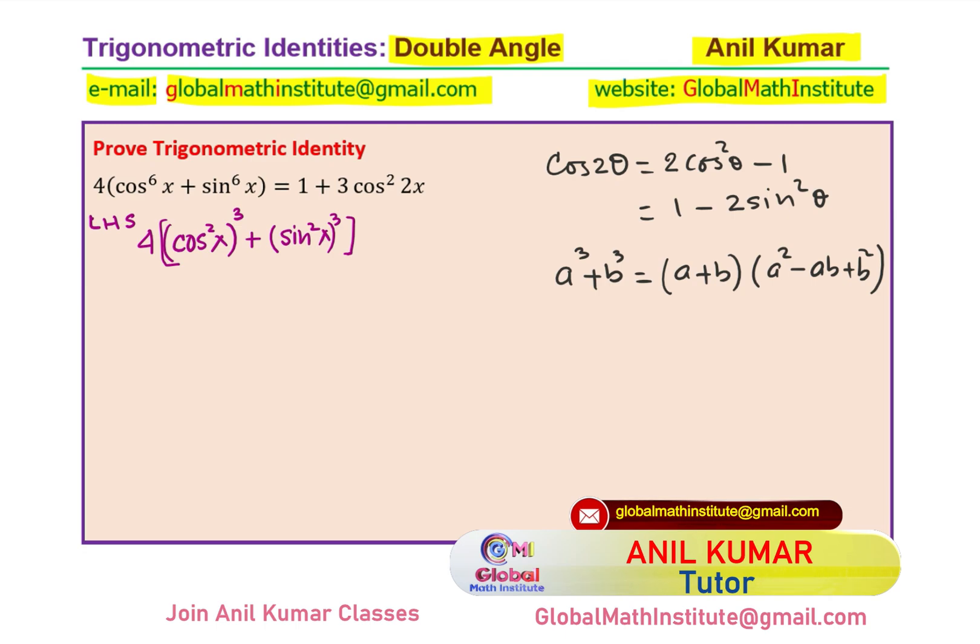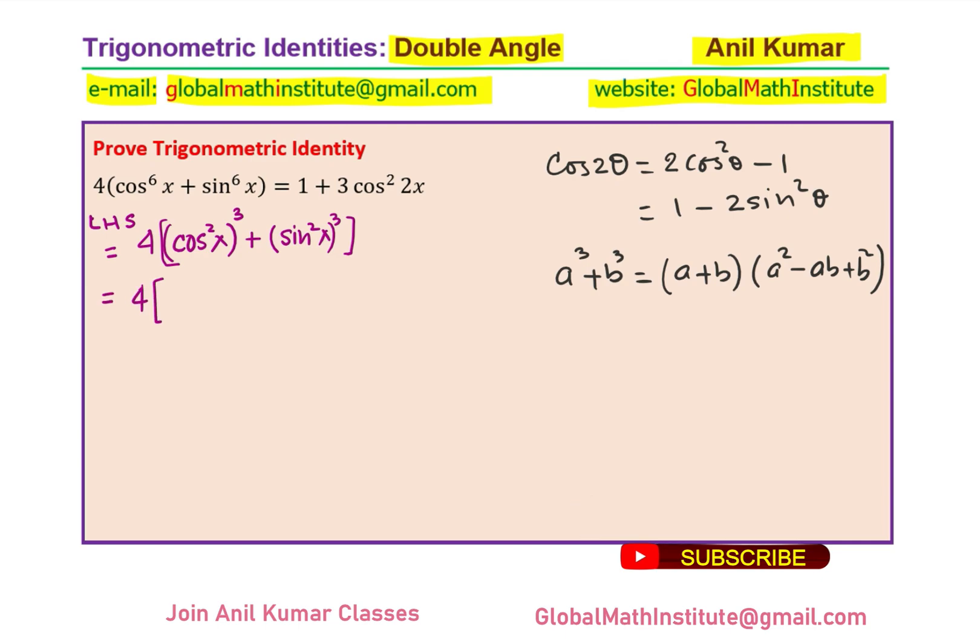Now we can apply this A cube plus B cube formula to factor this. We have A cube plus B cube is A plus B times A square minus AB plus B square. So A and B are cos square x and sin square x. So I will write down cos square x plus sin square x as the first factor, and square of cos square will be cos to the power of 4x minus cos square x sin square x plus sin to the power of 4x.